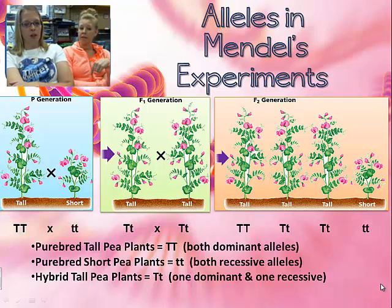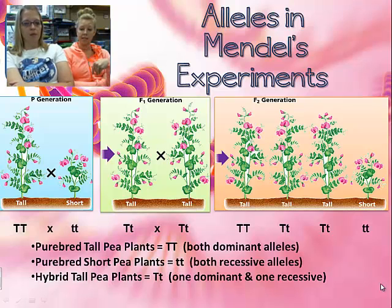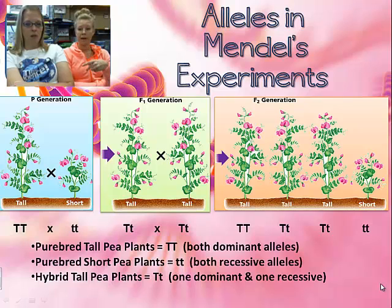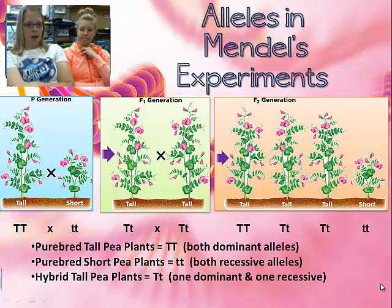Those tall carrier plants are no longer purebred — they're called hybrid plants. When those two hybrids then mix, you get the grandbabies, and here are the possibilities for what they could be. That's why the short plant pops back up: if both parents give their lowercase t, you get your short purebred plant back. I do want you to draw this in your notebook and write the words, because it's going to help you out.